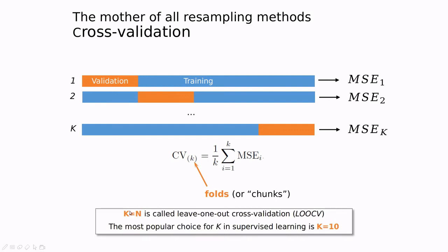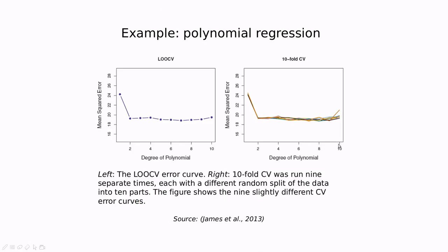There are a couple of examples. When k equals n, so basically we're using all the data set except one, we call that algorithm leave-one-out cross-validation. And the most popular one is k equals ten. Don't confuse this k with the k in the KNN algorithm.